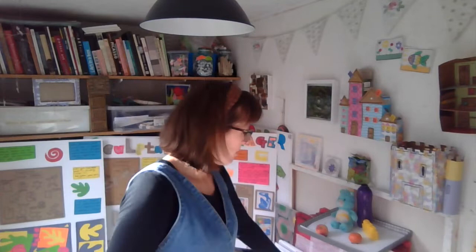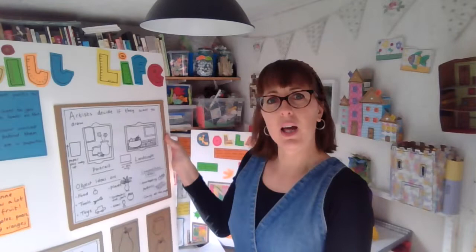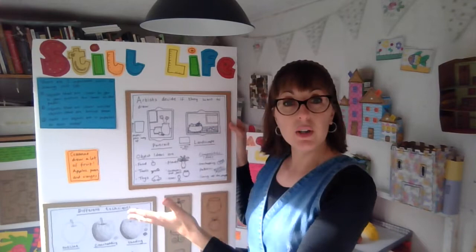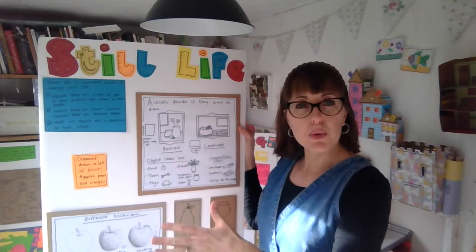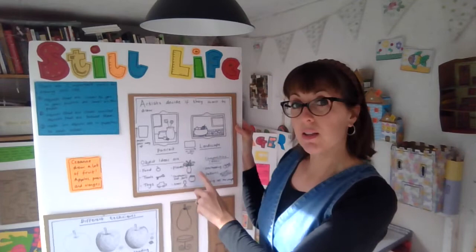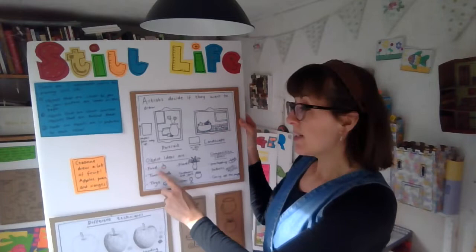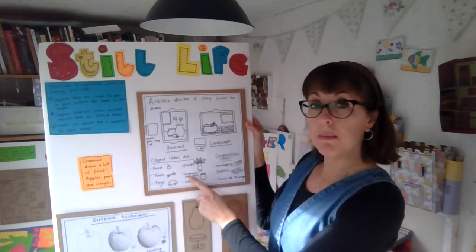Does anybody know what still life is? In After School Art Club, I've got my boards that I'll show the kids. The sun is glaring today in my little art shed, so hopefully you can see that. Still life is basically an arrangement of stuff that an artist wants to draw. An artist would set up on a table different types of objects from around the house. Typical object ideas include some food, some tools, some toys, maybe some plants, and some jars and containers.